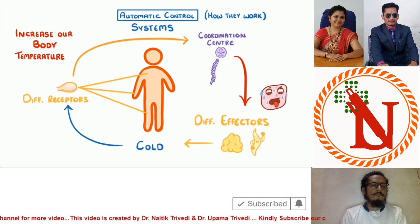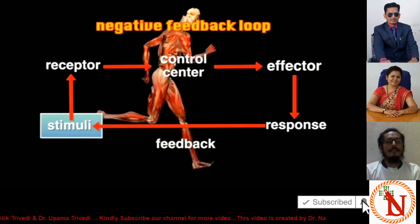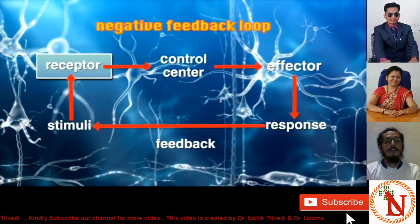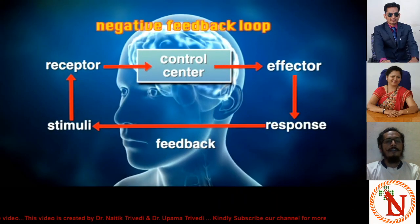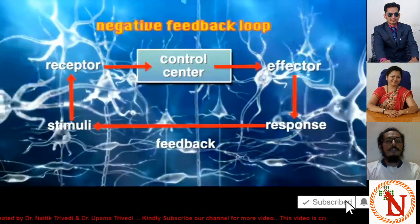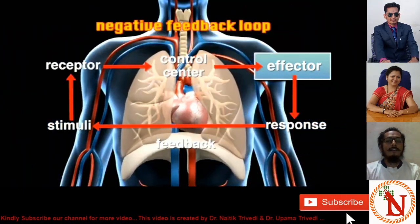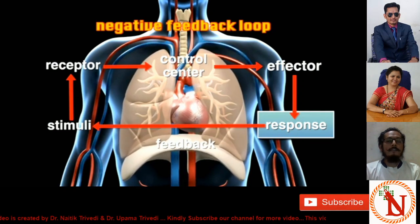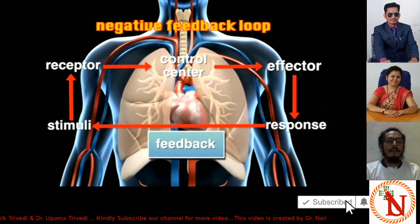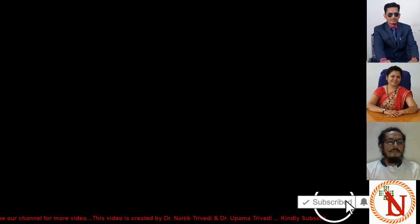One more example of negative feedback: when you do exercise, your body needs more oxygen. The receptor sends the message that your body needs more oxygen during exercise. It sends the message toward the control center via sensory neurons. The control center gets activated and sends the message toward the effector — which is the lungs and the heart. The lungs pump more rapidly, taking in more air, increasing the oxygen level and balancing the oxygen level during exercise.